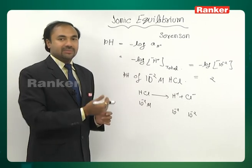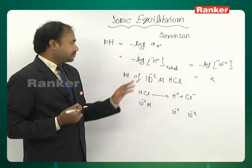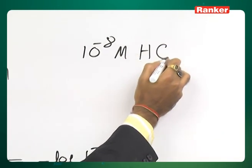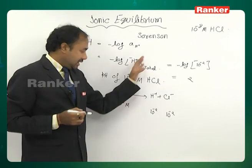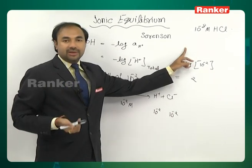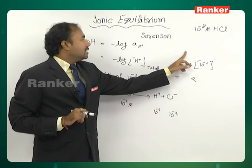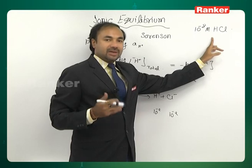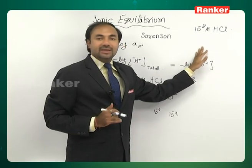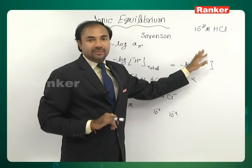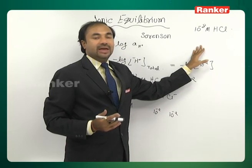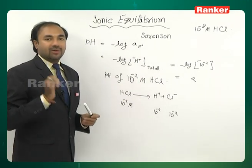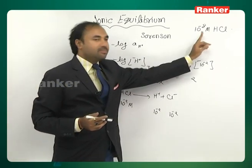This example looks simple, but we can get complicated cases. For example, find the pH of a 10⁻⁸ molar HCl solution. The immediate answer would be minus log(10⁻⁸) = 8, but there is a pH scale and if pH is more than 7 at 25°C the solution is basic. HCl is an acid, so it is impossible for it to be basic. We need to understand the equilibrium of pure water first.